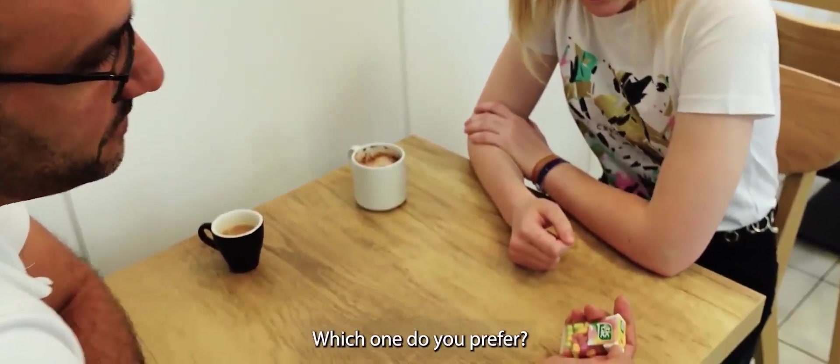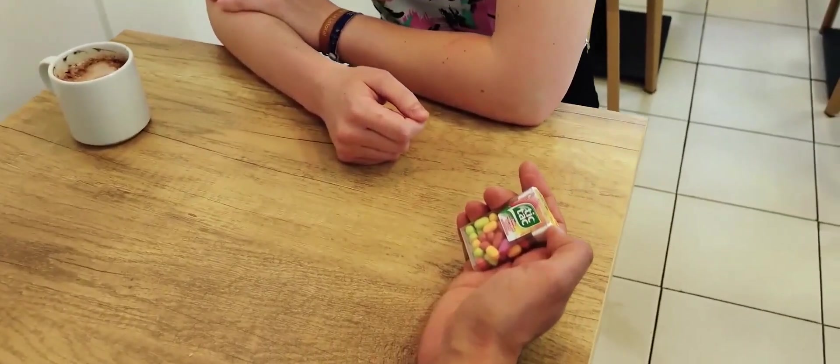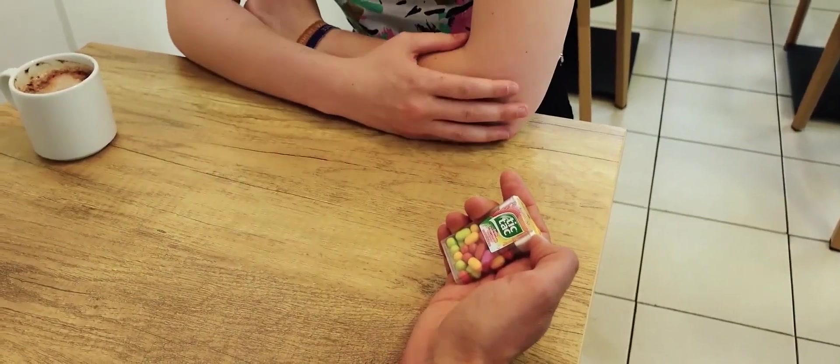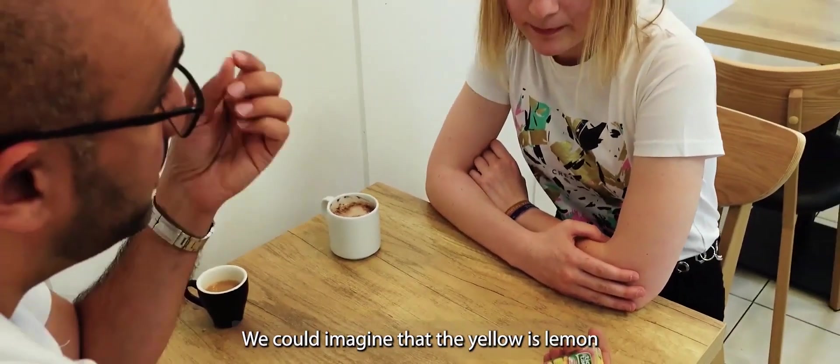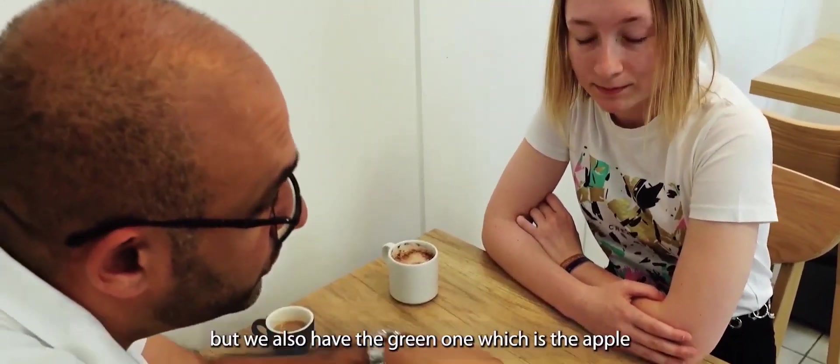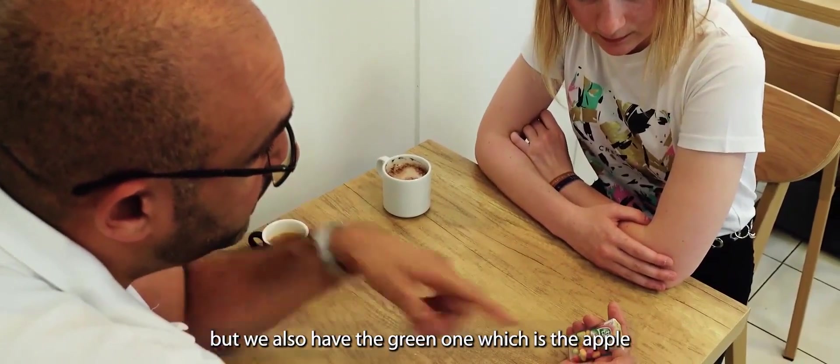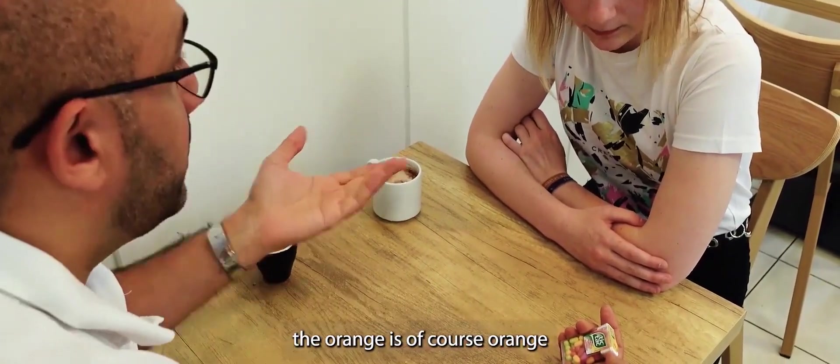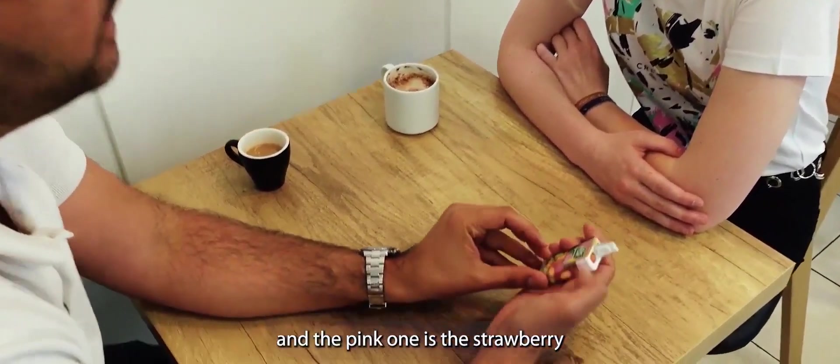Which one do you prefer? The yellow one? We could imagine that the yellow one is the lemon flavor, but we also have the green one is apple, the orange one is orange, and the pink one is strawberry.